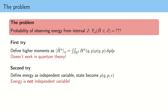A second try is to define energy as an independent variable, but we abandon this approach because we all know that energy is a function of position and momentum, and so we should not treat it as an independent variable if we can avoid it.